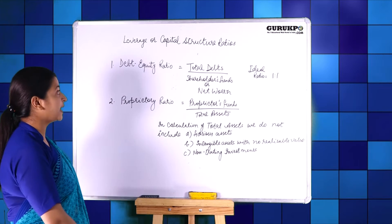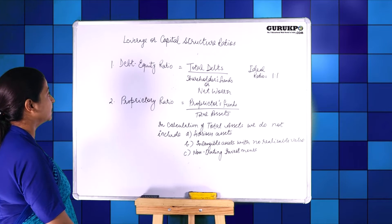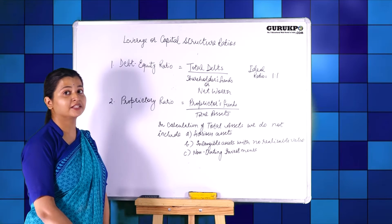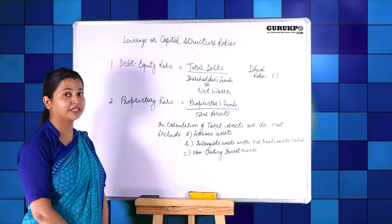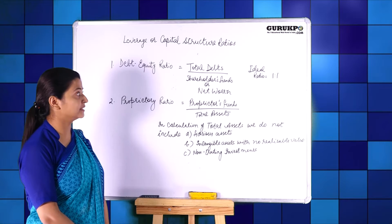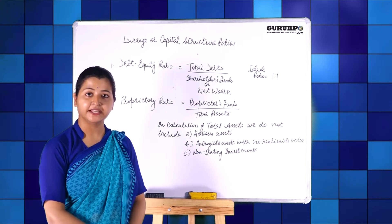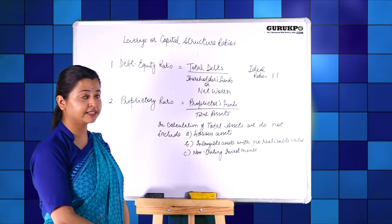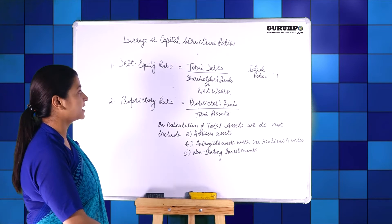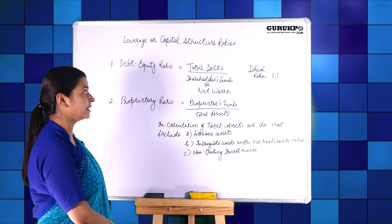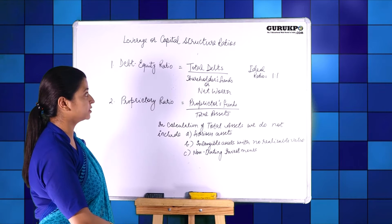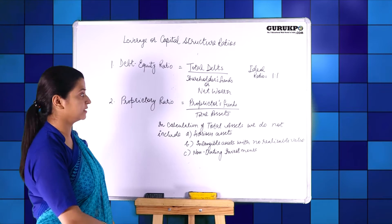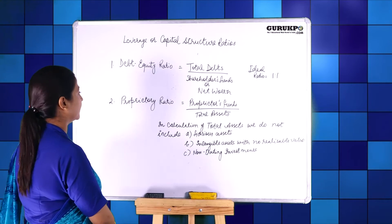The ideal ratio for debt equity ratio is 1:1. It determines whether the company is able to pay its long-term and short-term liabilities — that is, whether the firm is able to pay its total debts and total liabilities or not.